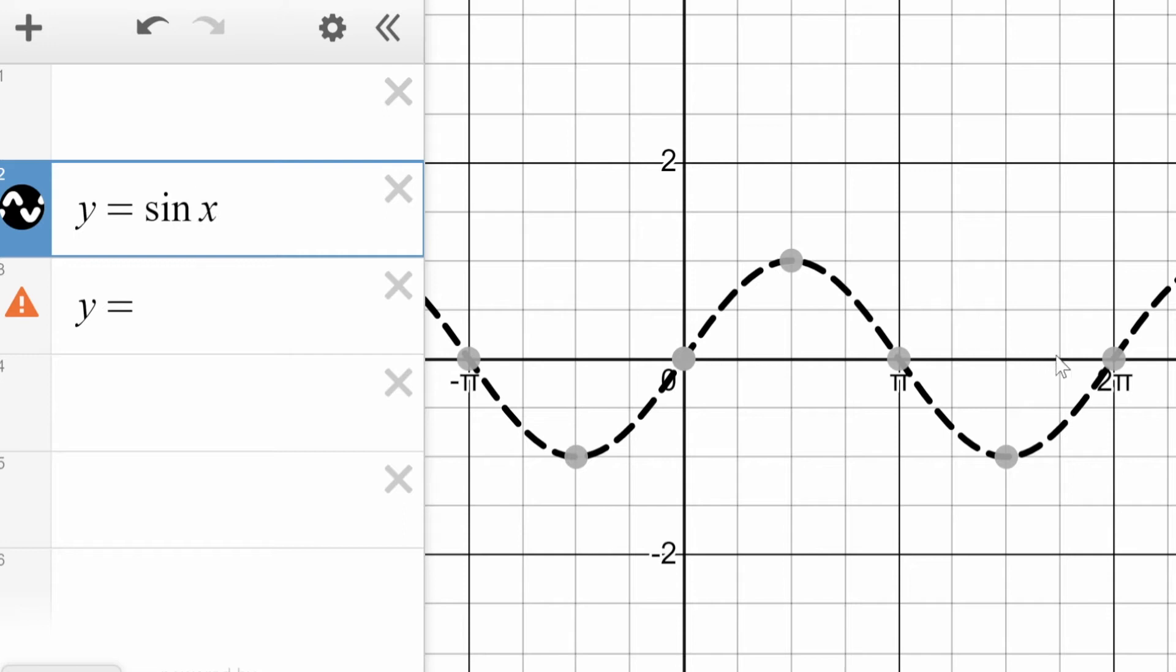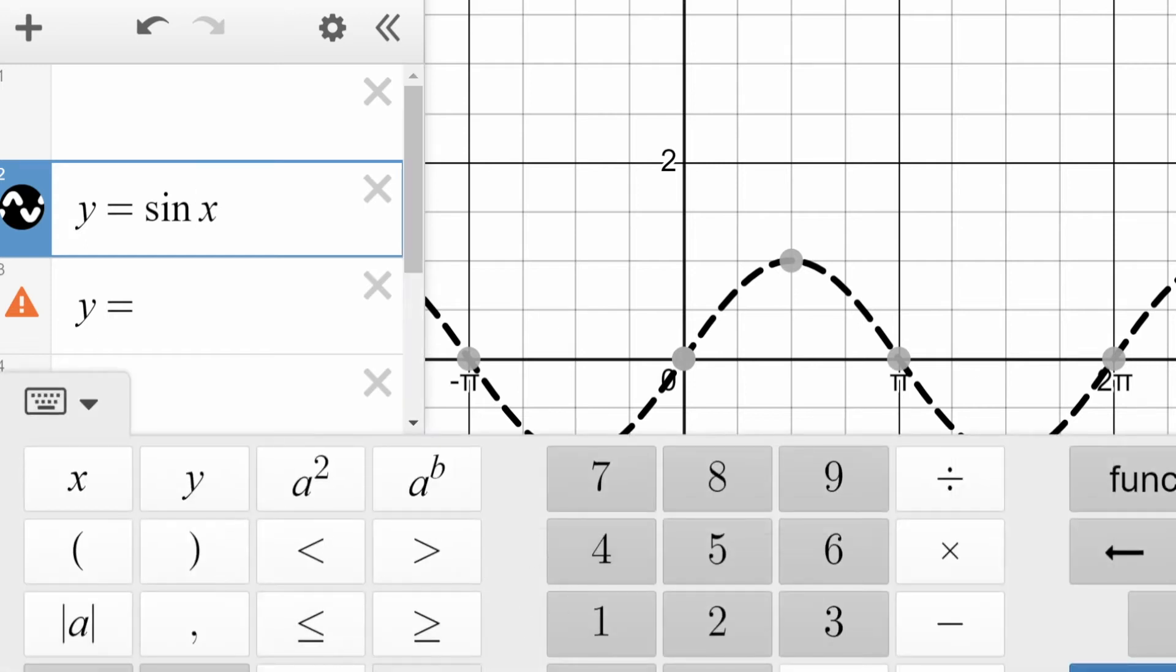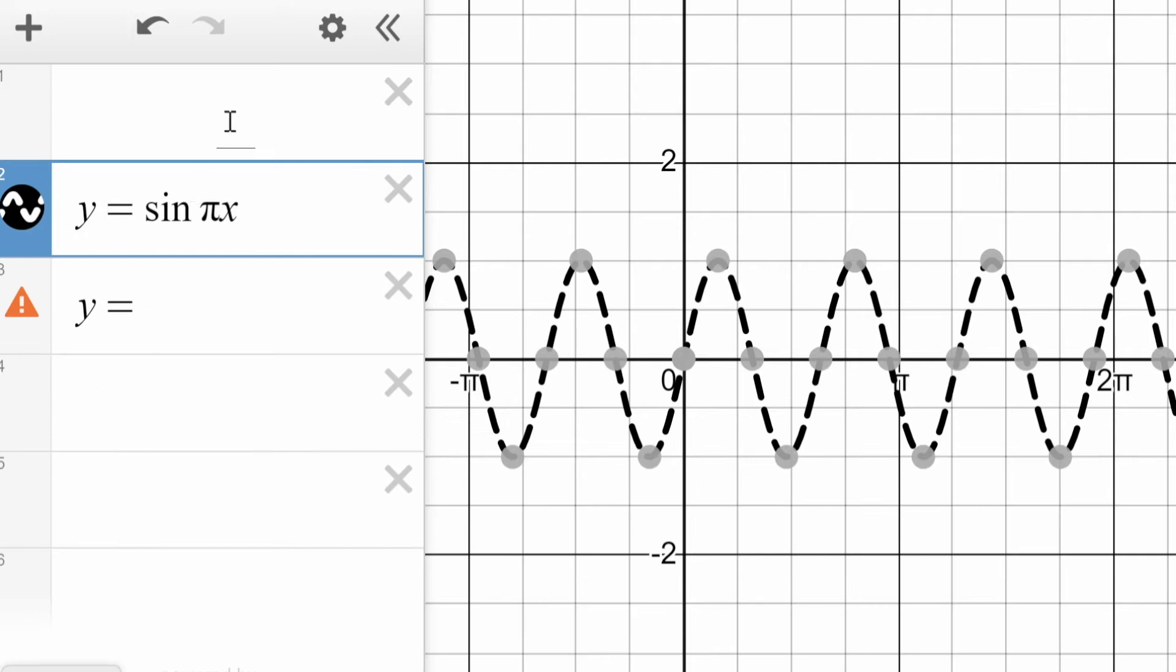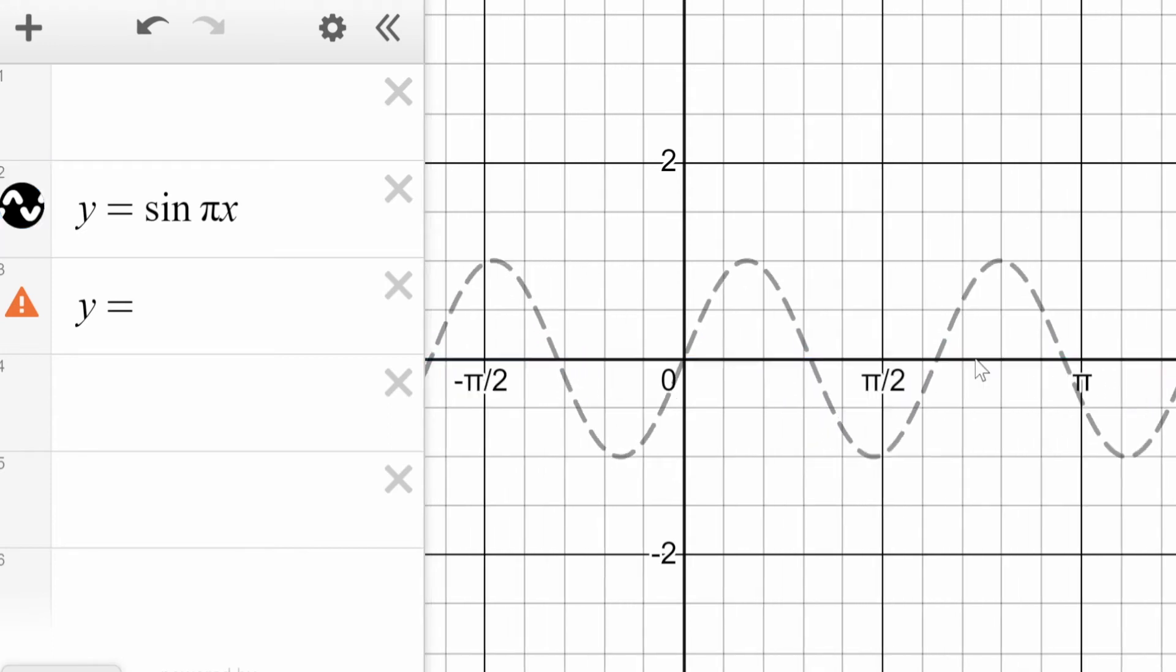Now remember that the period is 2π divided by this b value here. So if the period is normally 2π, and we're gonna divide it by the b value, the key here is that if we want the period to not have π involved, we need to put a π in here, so that when we divide it, 2π divided by the b value, if this has a π, the π will cancel out, and we'll get a rational period here. So what we're gonna do here is put a π in there, and then you see that the period is now 2 there, because the period is 2π divided by this value of π, so the period is 2. Now it's a rational number.